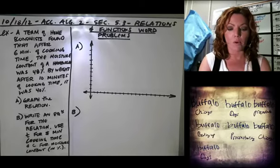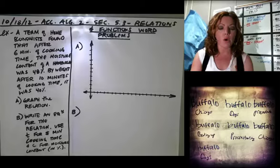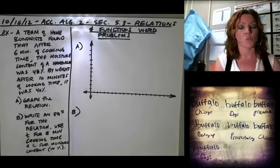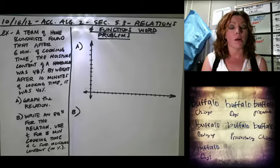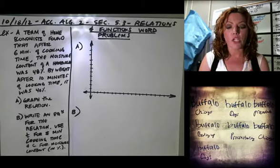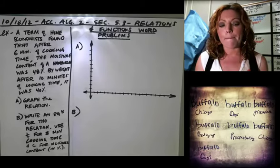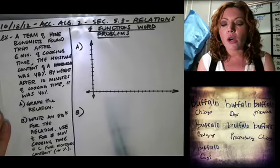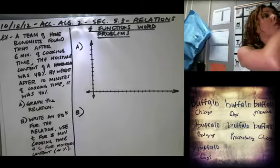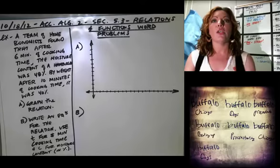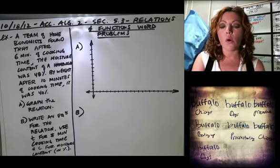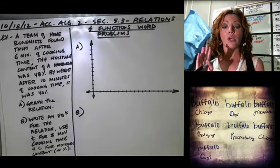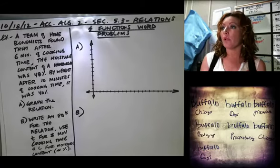The first thing we want to do is graph this relation. These are some of the easiest word problems ever. Remember, the variable that goes on the x-axis is the one that controls whatever's on the y-axis. So you guys tell me: what would go on the x-axis? We have two choices — cooking time or moisture content.